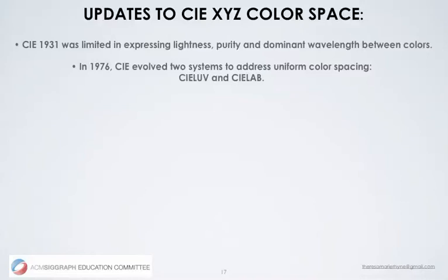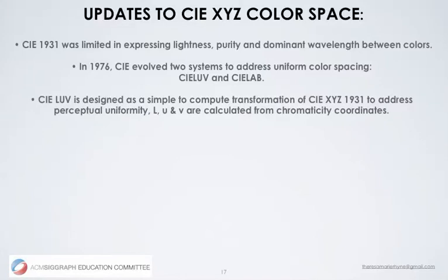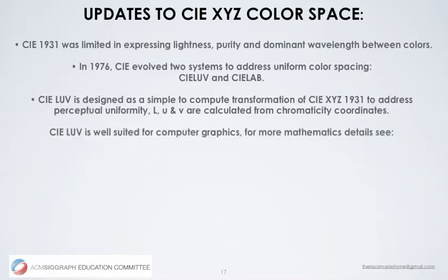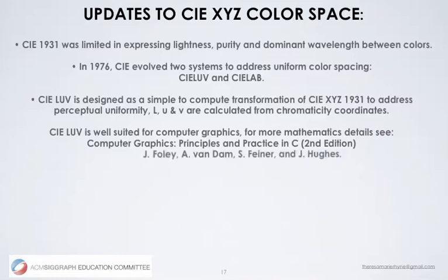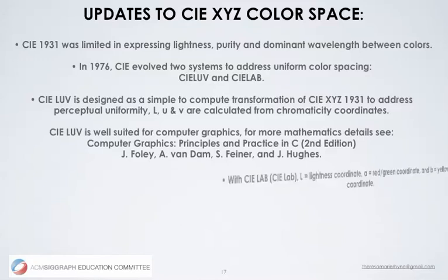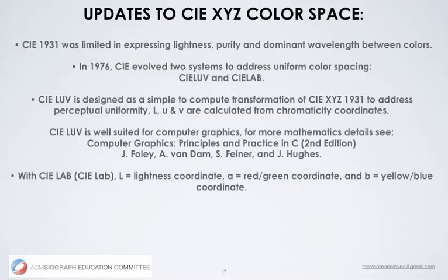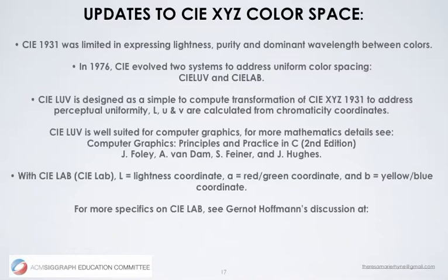The LUV standard is a simple-to-compute transformation from the 1931 standard to address perceptual uniformity. L, U, and V are calculated from chromaticity coordinates. It's well suited for computer graphics and digital display, covered in Computer Graphics: Principles and Practice in C by Foley, Van Dam, Feiner, and Hughes. With CIE Lab, L equals a lightness coordinate, A is a red-green coordinate, and B is a yellow-blue coordinate. The LAB standard is very well suited for high-end printing and other digital media transfers between RGB and CMYK.